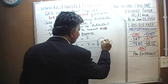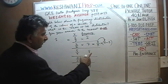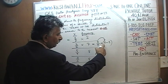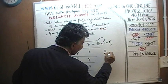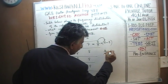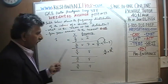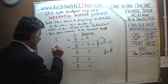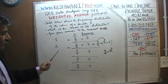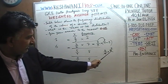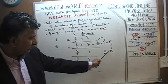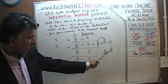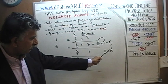Three-quarters times eight — the four cancels out with the eight, giving us two, and it's three times two, which is six. Three-quarters times eight equals six. That six represents eight three-quarters. Eight three-quarters equals six.